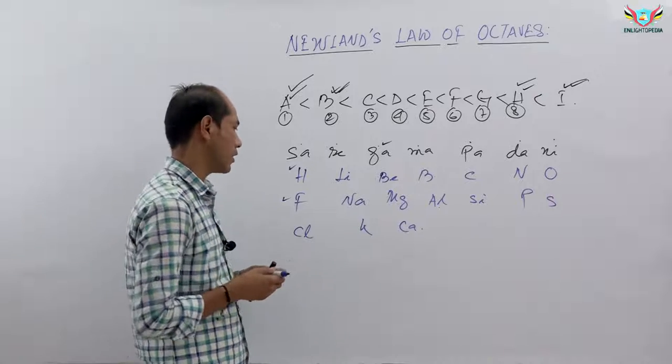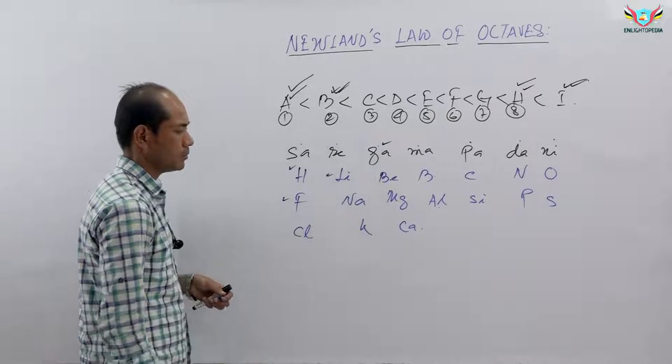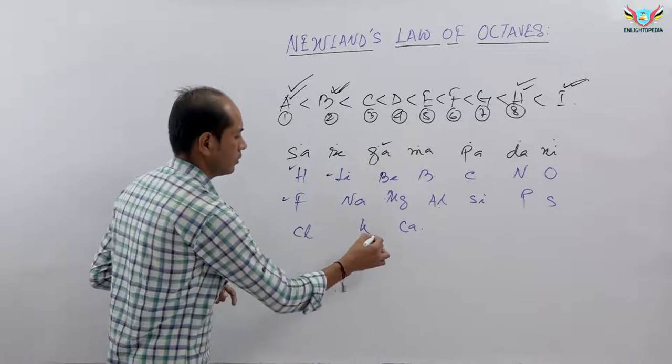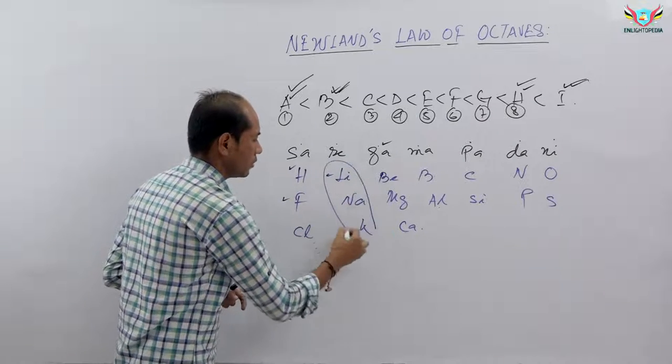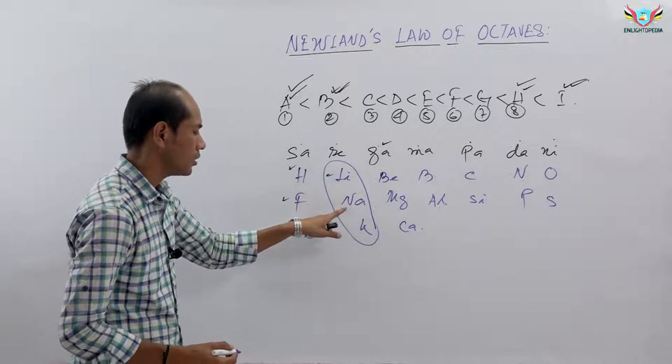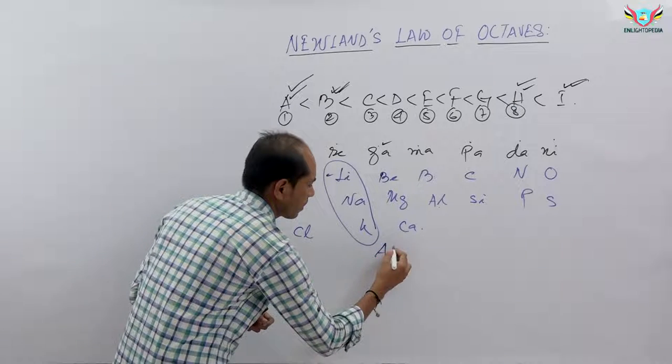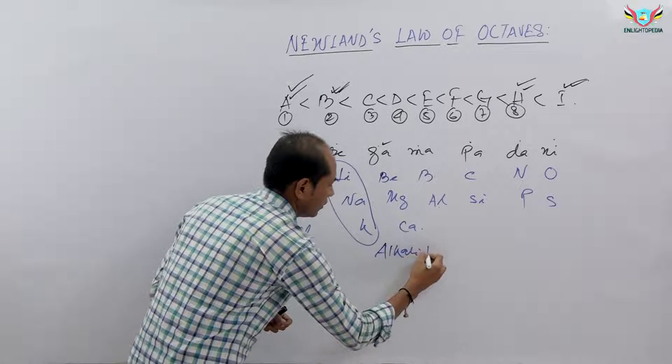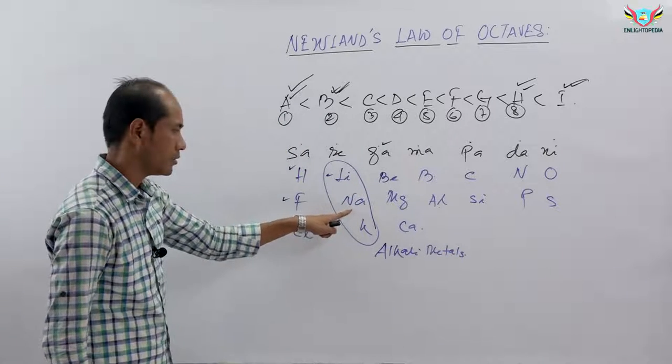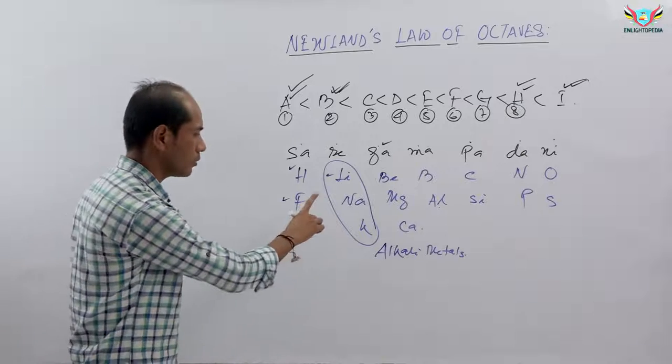Let me check this. For example, lithium, sodium, and potassium - these elements have similar properties. Dobernier explained this earlier. Lithium, sodium, and potassium are called alkali metals. They all have the same valency - valency of one.